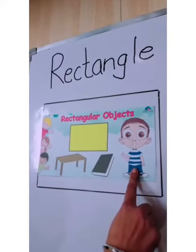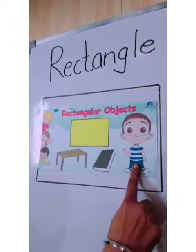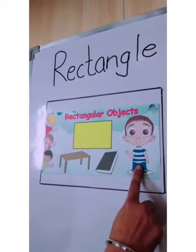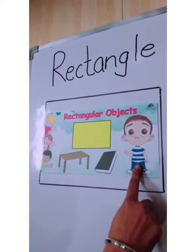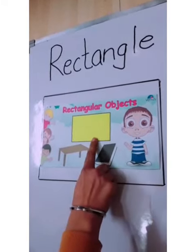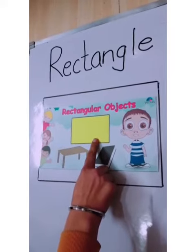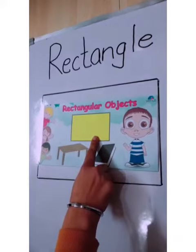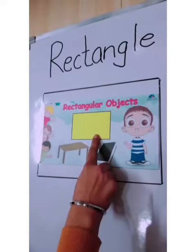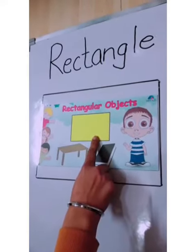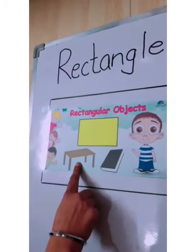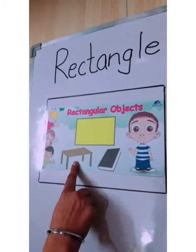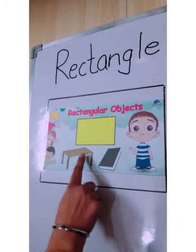Hello everyone, I am Mohit and today I will show you some objects related with rectangular shapes. What is this yellow color thing? This is a blackboard and the shape of blackboard is rectangle shape. Ma'am writes on the blackboard — she teaches us and writes with the chalk. This is a table and I write on the table. The shape of table is rectangle shape.